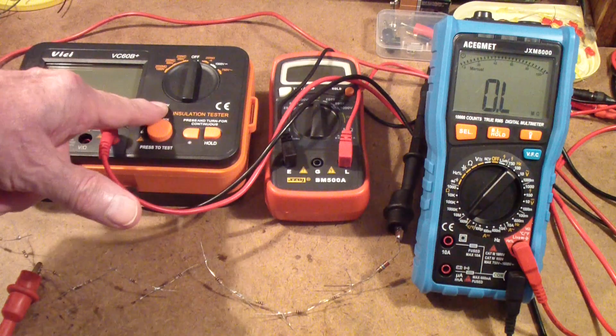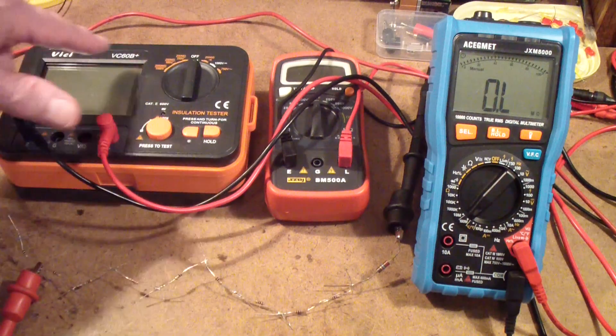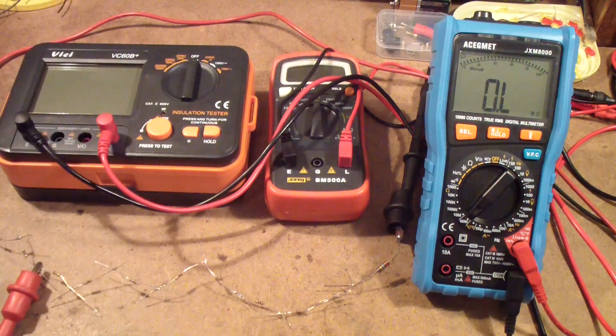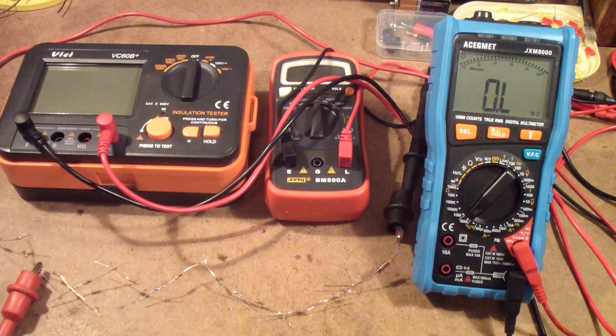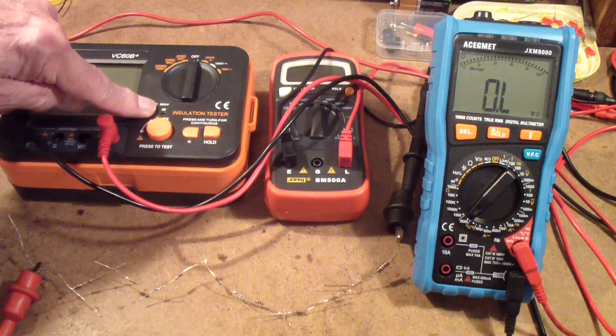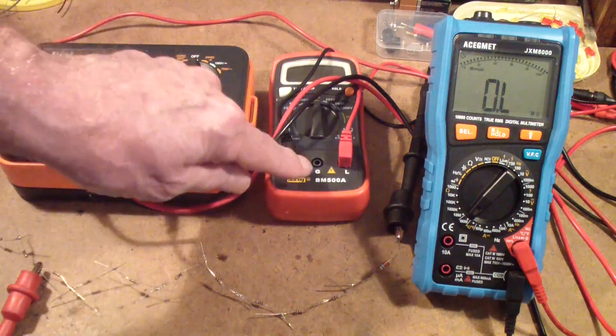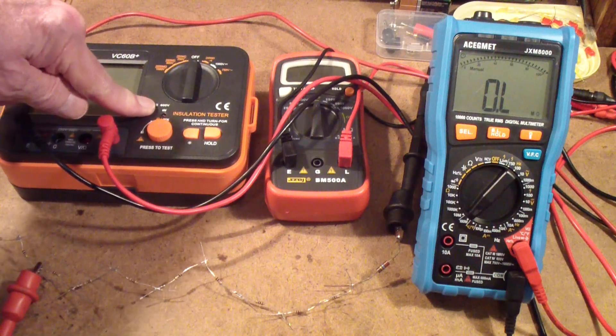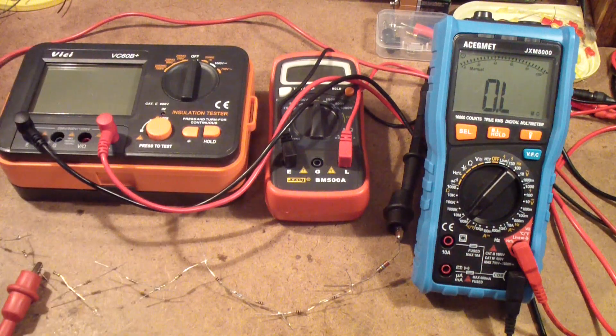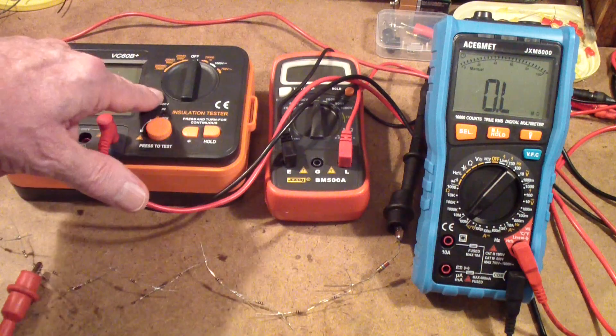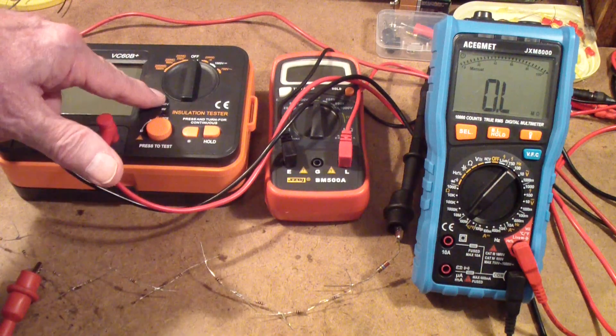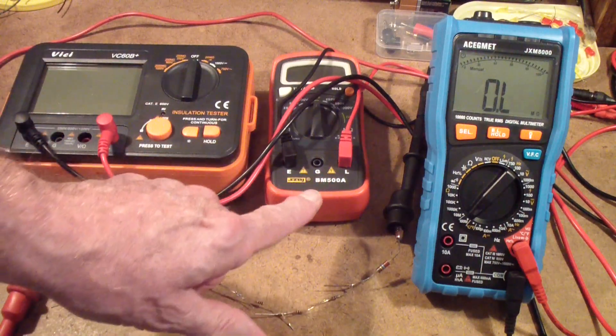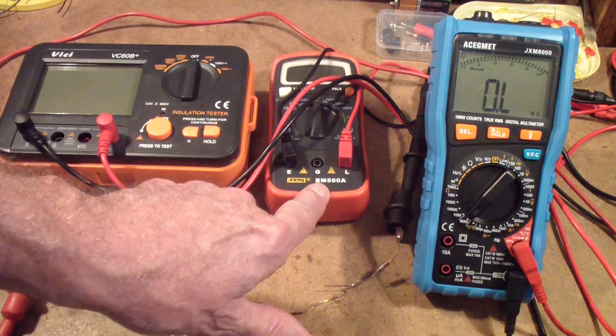The way these meters work is they have a low voltage battery that they run on, but then they have a step up circuit that boosts the voltage to, in the case of these two meters, 1000 volts. You can buy insulation resistance testers that go even higher. This one cost about $40 and this one cost about $25, this is the BM500A.